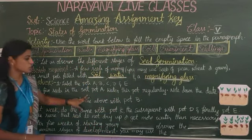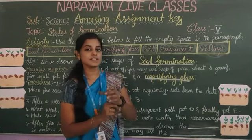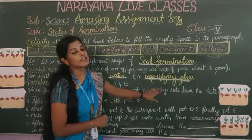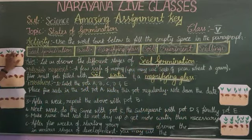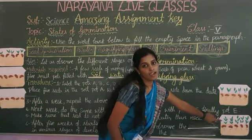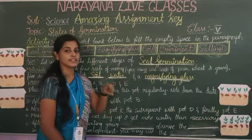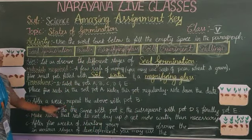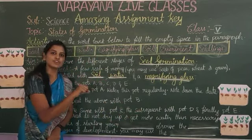Place five seeds in the soil of pot A. Select one pot, place the soil, place five seeds, water it regularly and note the date. After a week, repeat the above process with pot B.